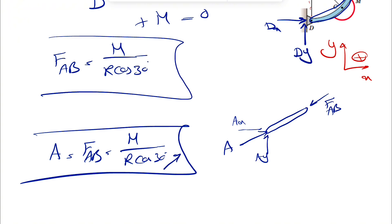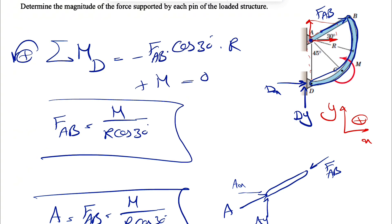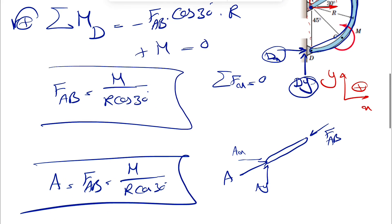And we don't need to show the reactions because the question is asking only for the magnitude of the force supported by each pin. The last one is D. If we get back to this free body diagram and do the sum of all forces in X and Y, we can see that FAB cosine of 30 would be DX and FAB sine of 30 is going to be DY. So basically, the reaction at D is also same as FAB.